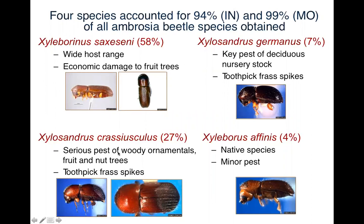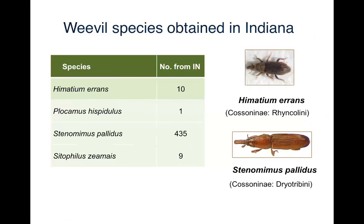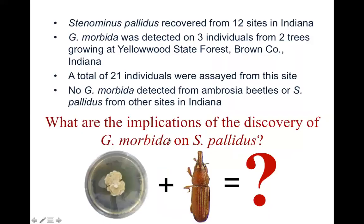Of the bark beetles obtained in Indiana, we collected about four main species, including a congenitor of the walnut twig beetle, Pityophthorus laudus. We also collected some weevils, including Stenomimus pallidus, of which 435 were collected in the state of Indiana. Stenomimus pallidus was recovered from 12 of those 15 sites in Indiana, and we detected Geosmithia morbida on three individuals from two trees growing at Yellowwood State Forest in Brown County.